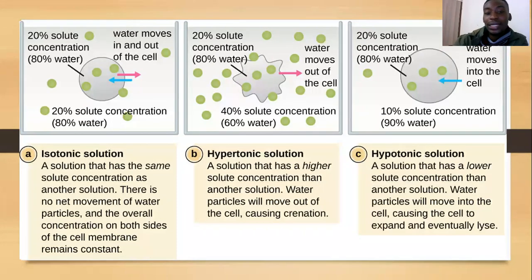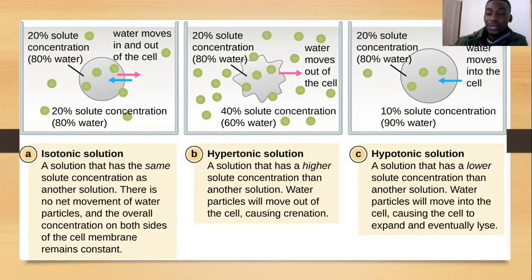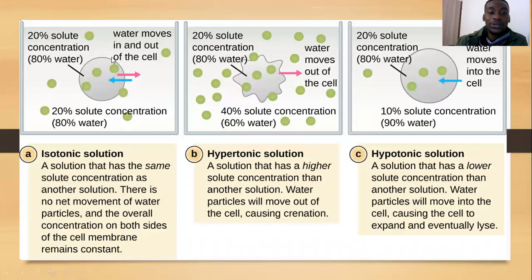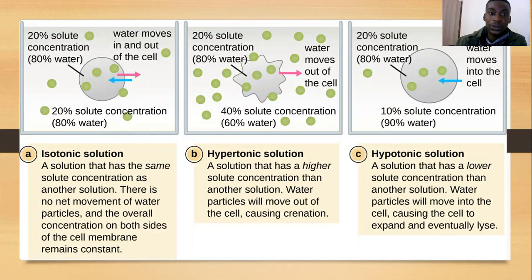What happens to a cell when placed in different types of solutions? An isotonic solution has the same concentration in and out of the cell — 20% solid concentration, 80% water on both sides. Nothing happens to the cell because the intracellular environment equals the extracellular environment.